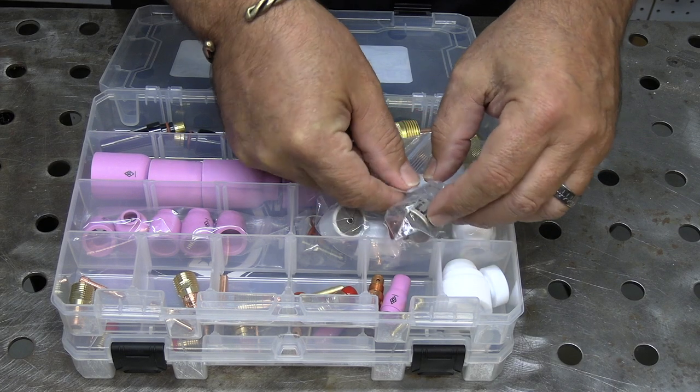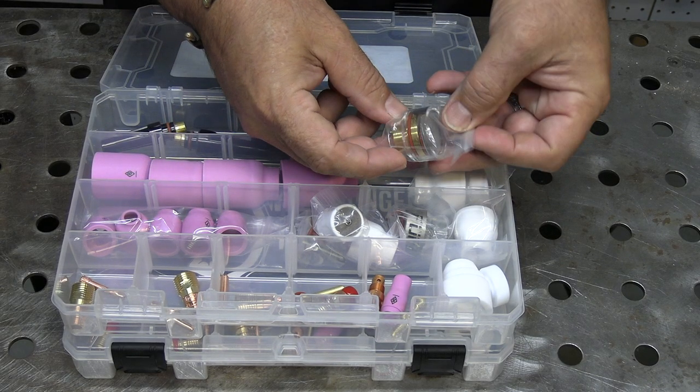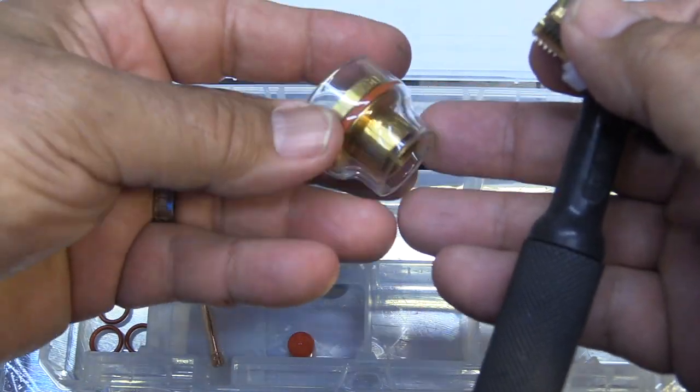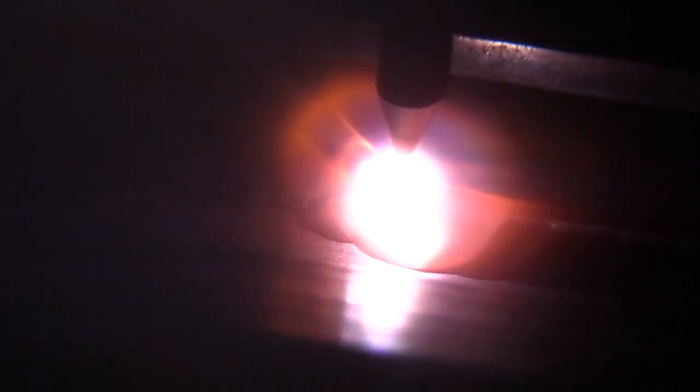For certain alloys, mainly titanium, you need an even larger shield of gas than any of these other cups. This is a BBW. The new design and Michael Furick is always improving on his products, but this one works great for titanium.